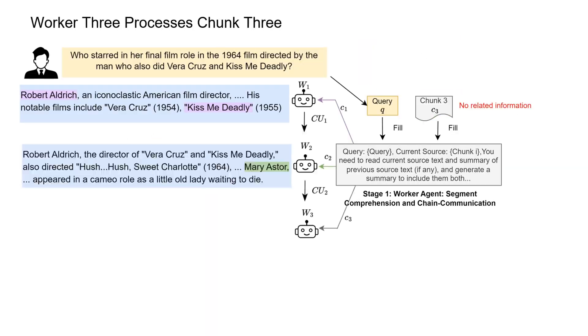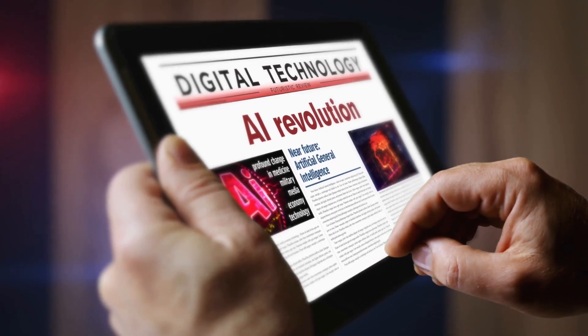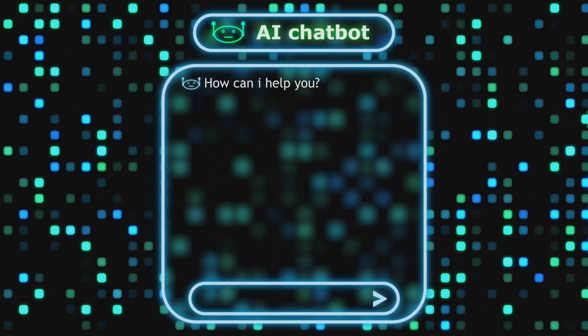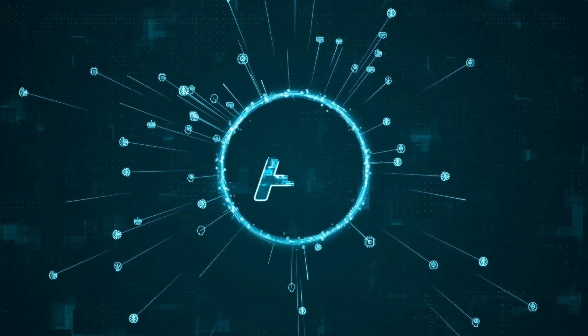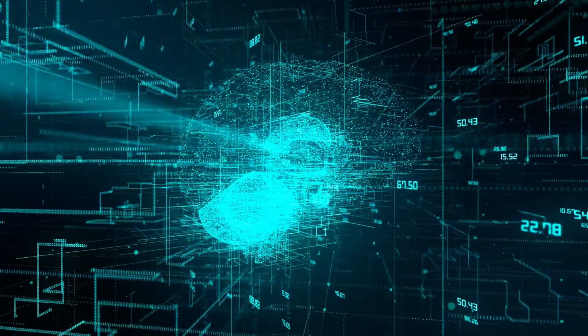What if your favorite AI could analyze an entire book, synthesize the main points, and answer your questions, all without skipping a beat? The new chain of agents framework, revolutionizing how AI handles long context tasks.